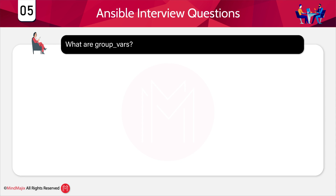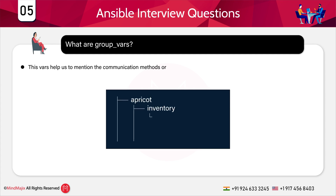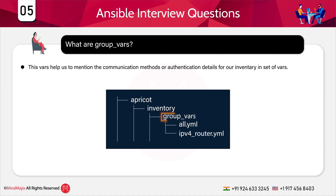What are group vars? Group vars help us to categorize our inventory in groups of hosts. The group variables help us mention the communication methods or authentication details for a group of hosts mentioned in inventory. For a particular group I mention variables for that group, and then I can mention variables for other groups separately — that is why we call them group vars.